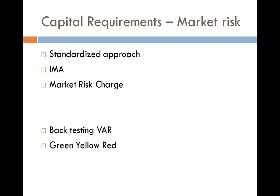The market risk capital for each market risk is computed as 8% of its market risk-weighted assets. The total capital charge is found by summing the capital charges across all market risk categories. Under the standardized approach, the total is simply the sum of all market risks — diversification effects are ignored.